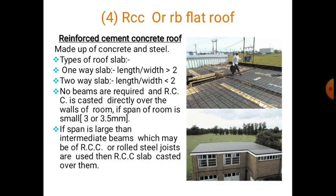An RCC roof is made up of concrete and steel. It may be of two types: a one-way slab, where the Ly/Lx ratio is more than 2, or a two-way slab, where the ratio is less than or equal to 2. There is no beam requirement in some RCC configurations. If the span is very small — around 3 to 3.5 meters — a simpler slab can be used; if the span is larger, an intermediate beam should be provided.